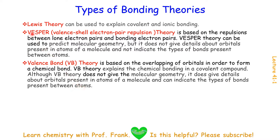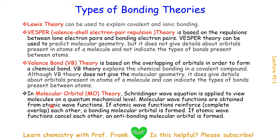Therefore, we will need both VSEPR and VB theories in discussing chemical bonding. Another type of theory is the Molecular Orbital Theory (MO). We apply the Schrödinger Wave Equation in Molecular Orbital Theory to view items on a quantum mechanical level. When atomic wave functions completely overlap each other, a bonding molecular orbital is formed. On the other hand, if atomic wave functions cancel each other, then anti-bonding molecular orbitals are formed.